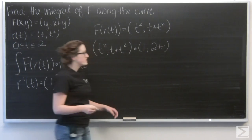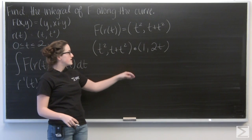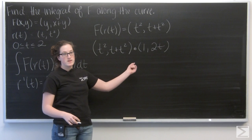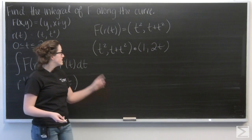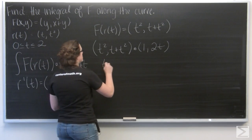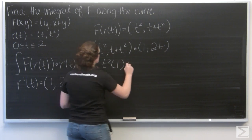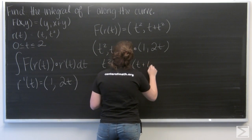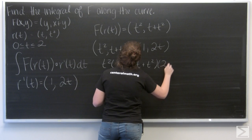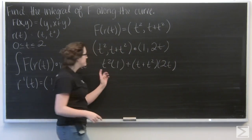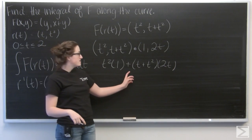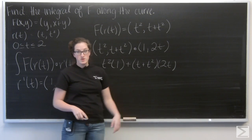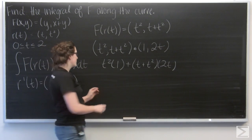So remember, for a dot product, I'm going to multiply the i components together and then multiply the j components together and add those. So I have t squared times 1 plus quantity t plus t squared times 2t. Let's go ahead and multiply those out.